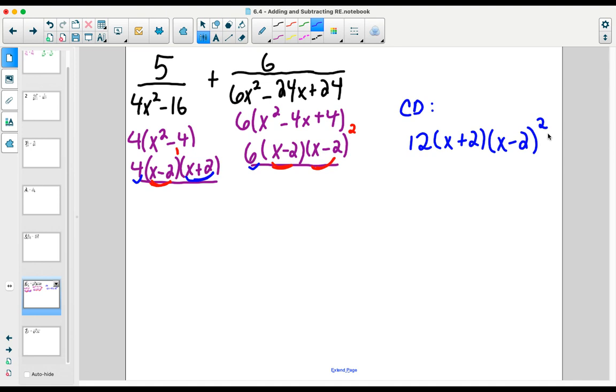Will that make for slightly more complicated multiplications in order to create the common denominator? Sure, but that's the necessity. We need all of the components of each of the denominators to appear as a factor of the common denominator.